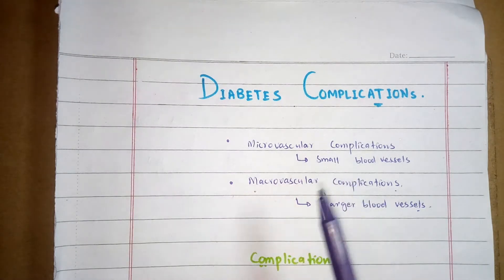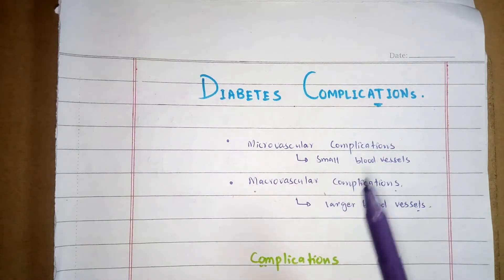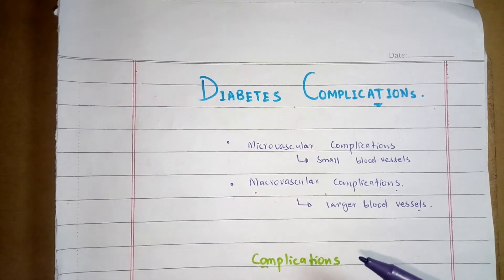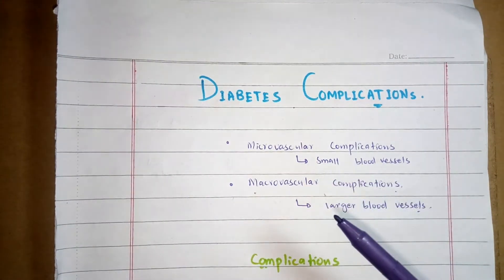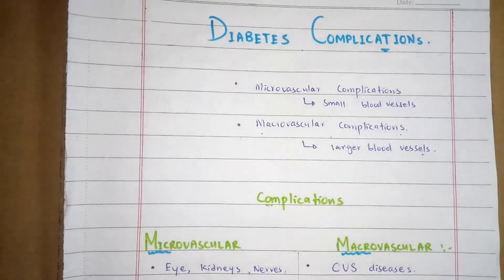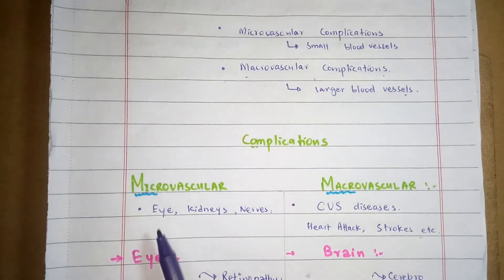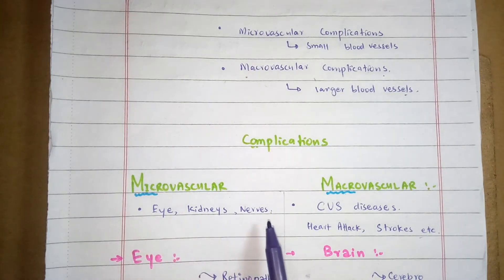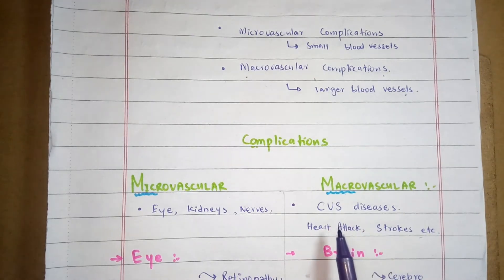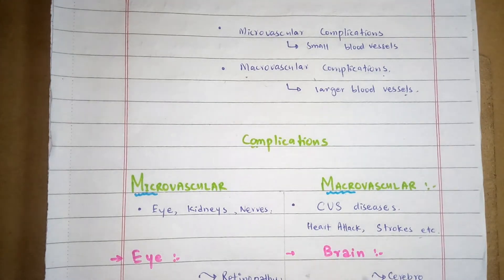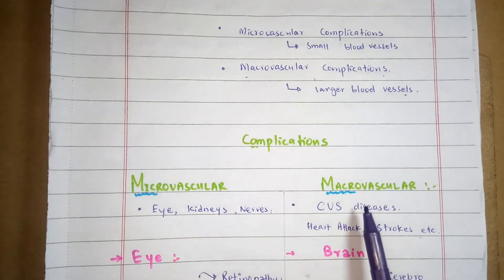Microvascular complications include structures such as the eyes, kidneys, and nerves. Macrovascular complications include cardiovascular diseases such as stroke, heart diseases, heart attack, and reduced blood flow to the legs. These are the organs and systems involved in microvascular and macrovascular complications.